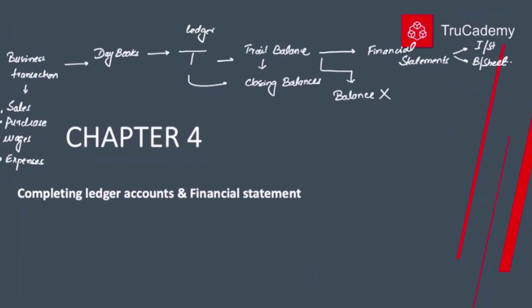When the trial balance doesn't balance, we open a suspense account. We open the suspense account whenever the total debits of the trial balance are not equal to the total credits of the trial balance.